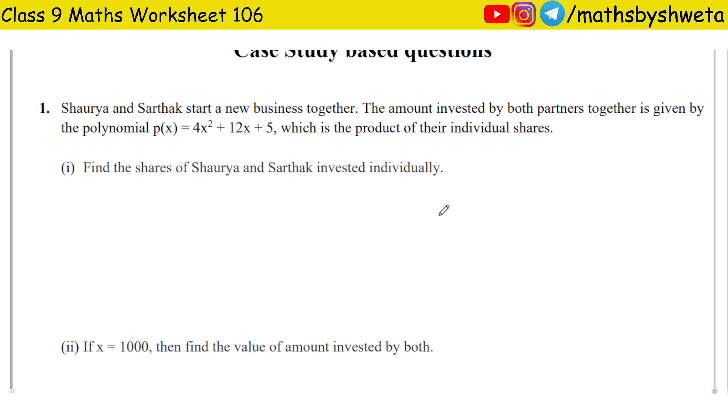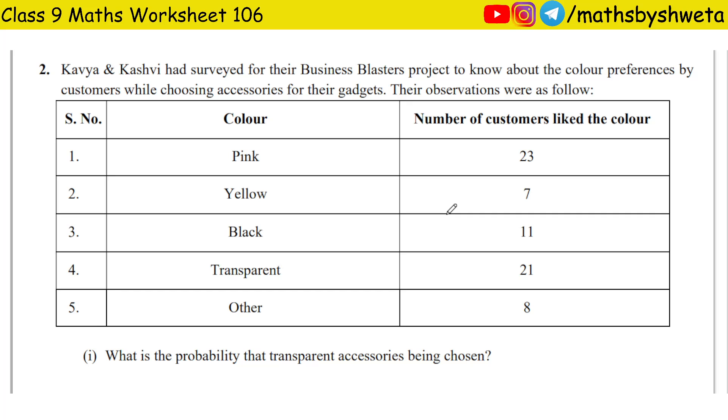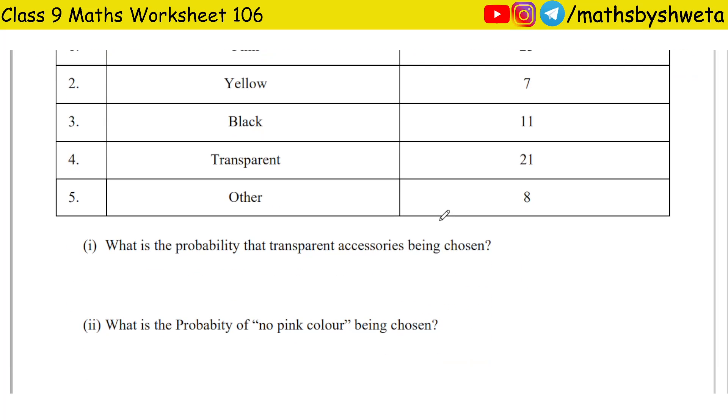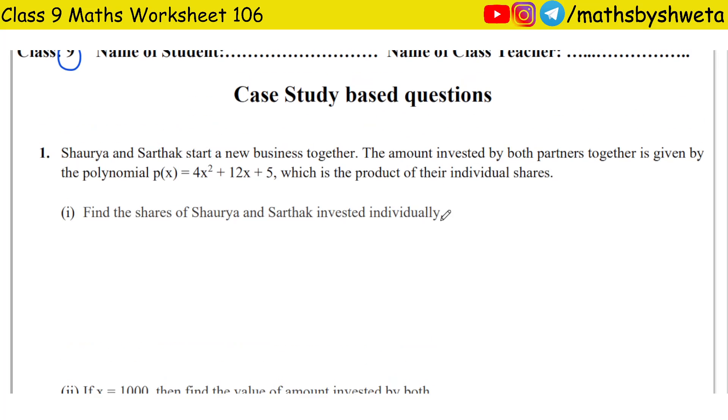Which chapters? Chapter No. 2 is Polynomials and Chapter No. 15 is Probability. The case study is very easy. Let's start.